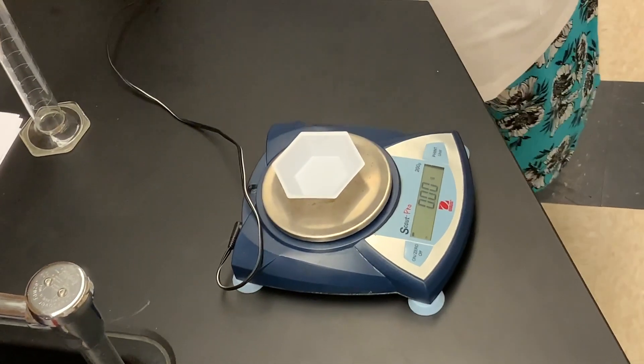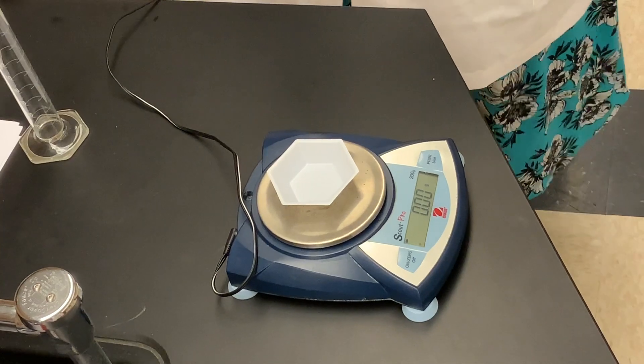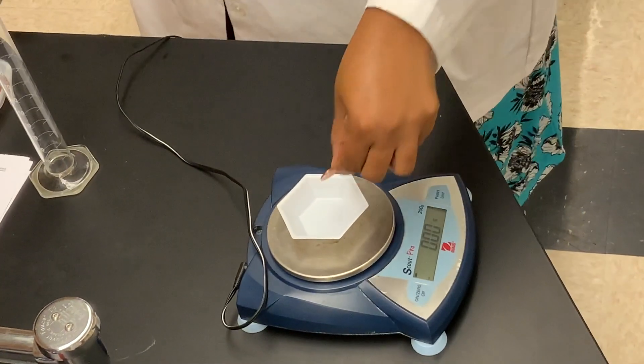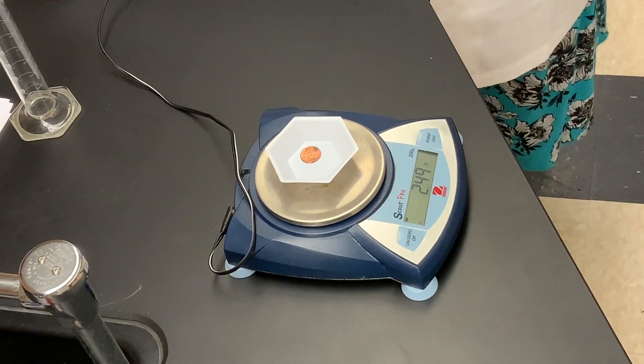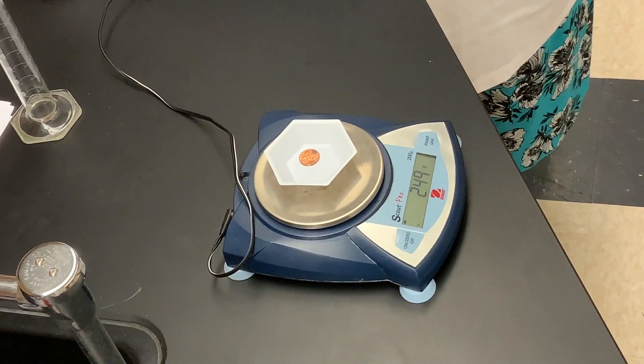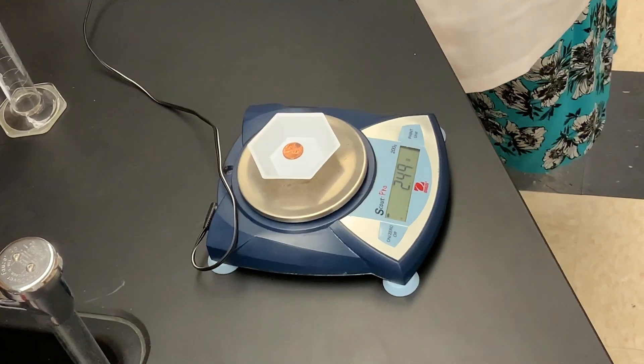Now that we've tared or zeroed our balance, we can take one penny and place it in the weigh boat. We'll record the mass of one penny. It reads 2.49 grams.